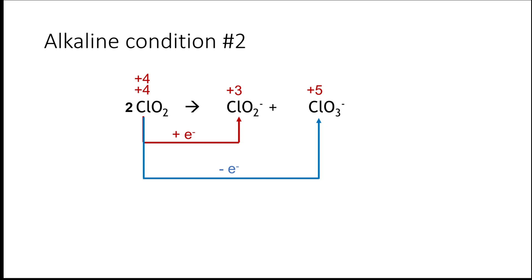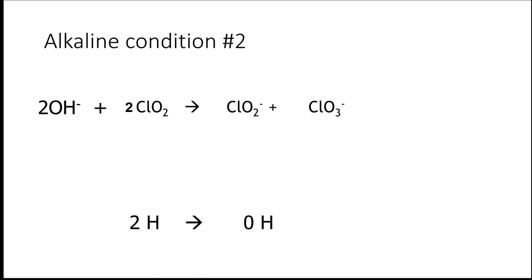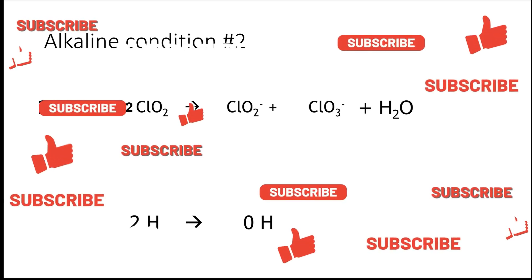Next, calculate the total charges on either side. On the left-hand side we have zero charge, and on the right-hand side we have −2. To balance the charges, we need to add 2 hydroxide ions on the left-hand side, making the charges on either side −2. Lastly, we have 2 hydrogen on the left, so we balance the hydrogen by adding 1 water molecule on the right. That's all for this video. I hope you find it useful. Please like and subscribe. Thank you.